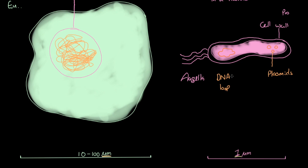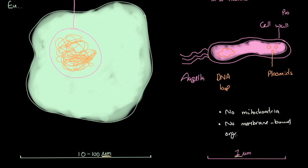A couple more points useful for future studies: prokaryotic cells have no mitochondria. Mitochondria are structures that allow the release of energy through aerobic respiration, and prokaryotic cells never have any. We can also say they have no membrane-bound organelles at all — so structures like chloroplasts, found in green plants, are membrane-bound organelles absent from prokaryotic cells.